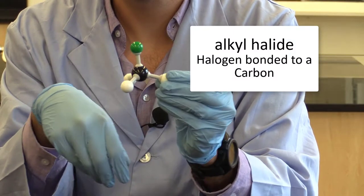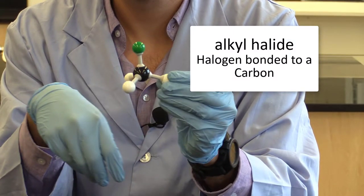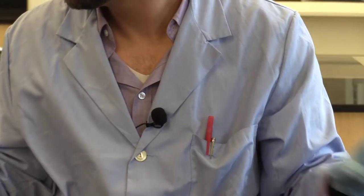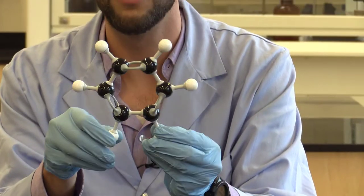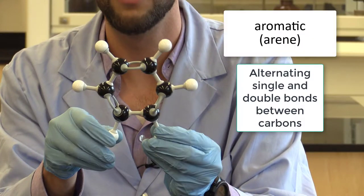So here I'm showing a chlorine bonded to a carbon, but you could also have other halogens bonded as well. This is our aromatic ring. The thing to note with aromatic rings is that you have alternating double bonds.